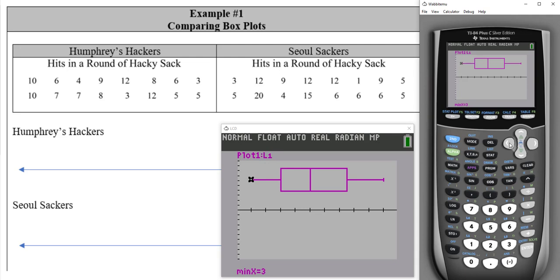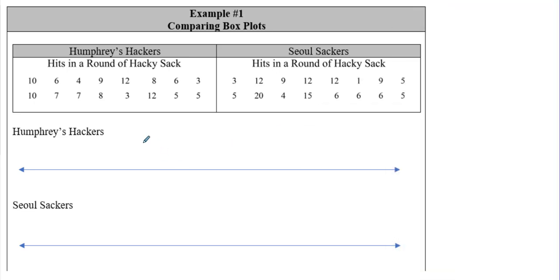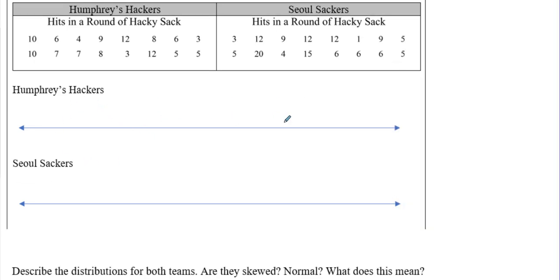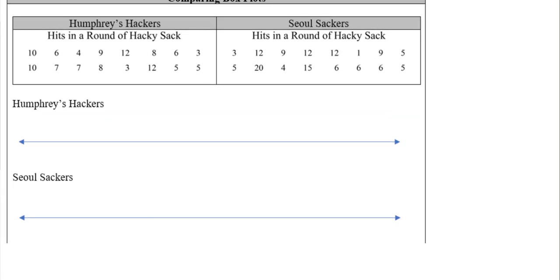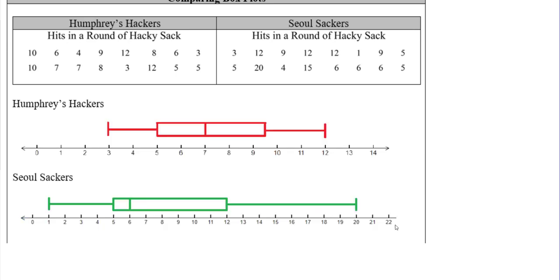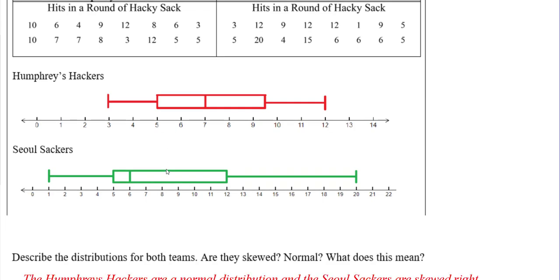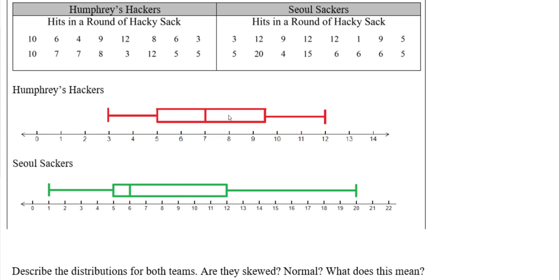To draw by hand, all we need is that five number summary. Go ahead and pause the video here — I'm going to let you draw your box plots for Humphreys Hackers and for Soul Sackers — and then we'll talk about the questions. Welcome back. Here is what our box plot looks like for Humphreys Hackers, and then we have our box plot for Soul Sackers.